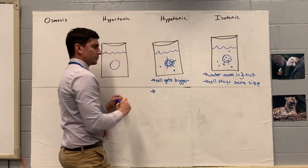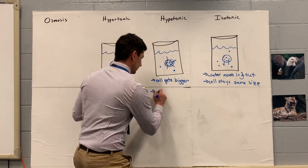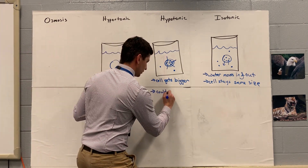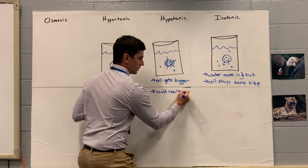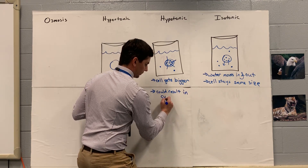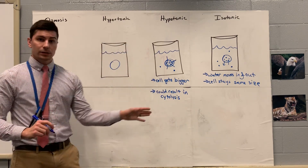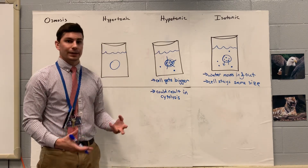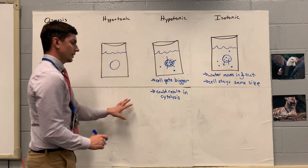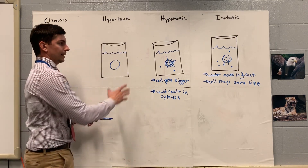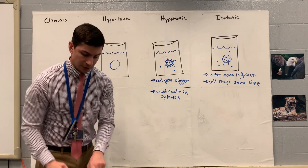If there is a lot of solute inside of the cell and the cell continues to get bigger and bigger and bigger, it could result — not all the time, but sometimes — in something called cytolysis. Cytolysis: the prefix cyto means cell, lysis means breaking. It's literally the breaking of the cell. That's only for hypotonic solutions — that's the only one cytolysis is going to occur in.